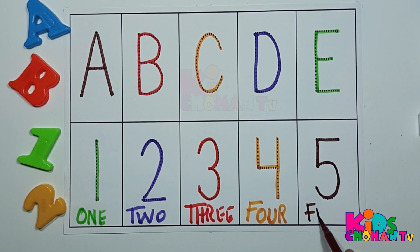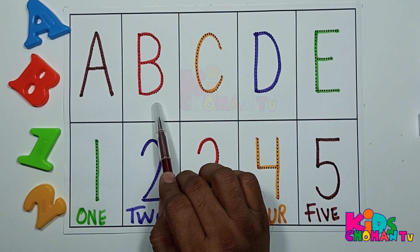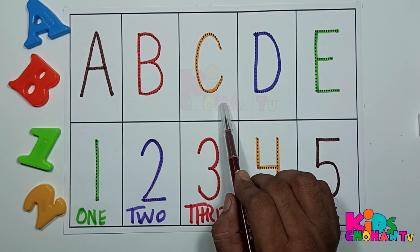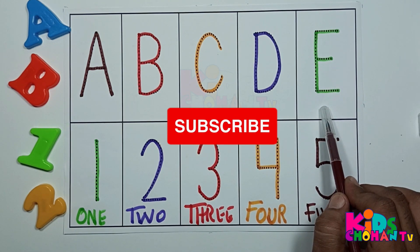F-I-V-E, five. Now kids, read again. A, A for apple. B, B for bat. C, C for car. D, D for dinosaur. E, E for elephant.